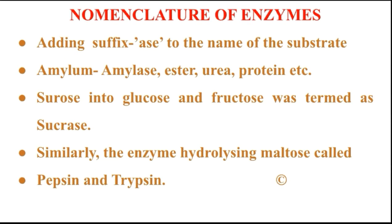Next is the nomenclature of enzymes — that is, the naming of enzymes. There is no general rule for naming enzymes; they are named by adding the suffix '-ase' to the name of the substrate. For example, amylase is formed by adding '-ase' to amylum, and urease is formed from urea, and protease from protein.